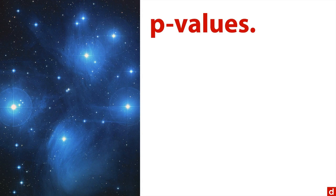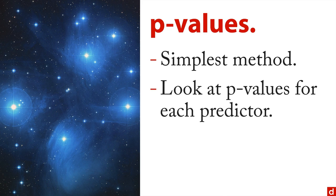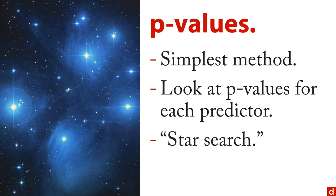First is p-values or probability values. This is the simplest method because most statistical packages will calculate probability values for each predictor and put little asterisks next to it. So what you're doing is looking at the p-values, the probabilities for each predictor, or more often the asterisks next to it, which sometimes gives us the name of star search. You're just kind of cruising through a large output of data and looking for the stars or asterisks.